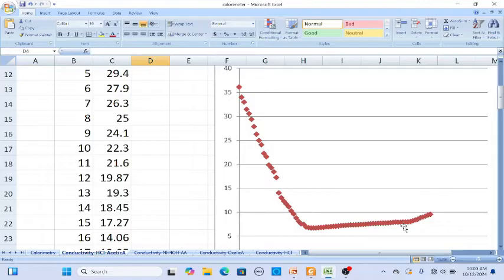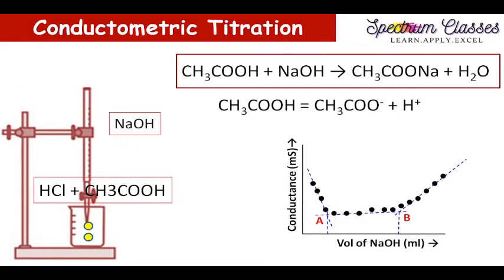This is the kind of graph we obtained. Now I am going to explain the inferences we have made. When we titrate the mixture against a strong base, we get this kind of graph as given in the literature. Now, how are we going to interpret this kind of graph? Initially, using the ionic mobility values I provided: